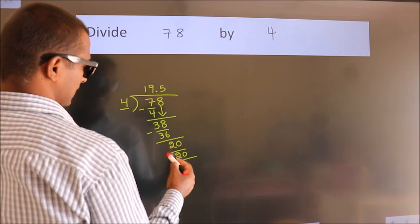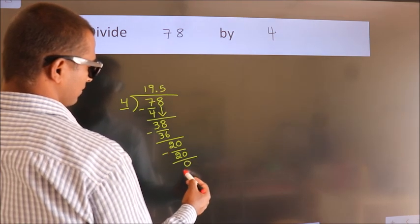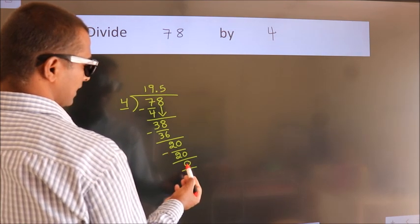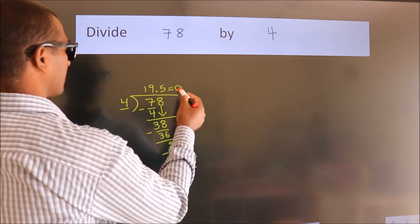Now we subtract and get 0. We got remainder 0, so this is our quotient.